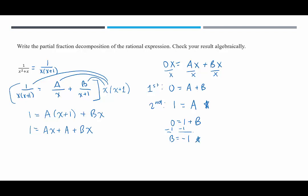Now we can write the final answer — the final decomposition. Going back to the original two-term form, instead of A we have 1 over x, and instead of B we have negative 1. Rather than putting negative 1 in the numerator, I'll move it in front of the fraction as subtraction, giving us 1 over x minus 1 over (x plus 1). That is the partial fraction decomposition.